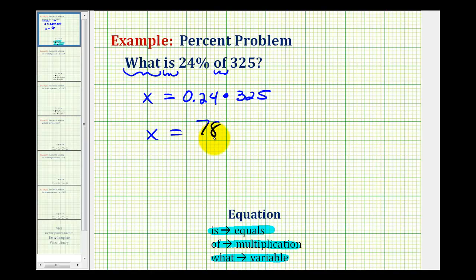Now I think it's important that we take a look at this question one more time. We're saying x is seventy-eight, so we're saying that seventy-eight is twenty-four percent of three hundred twenty-five, which does seem like a reasonable answer.